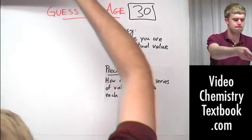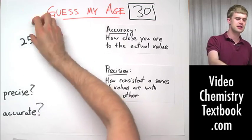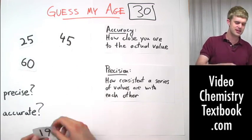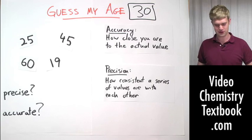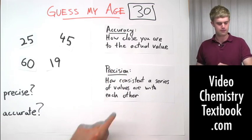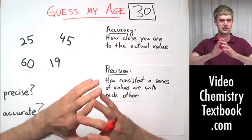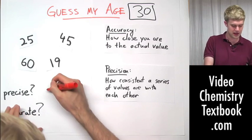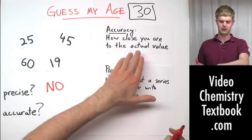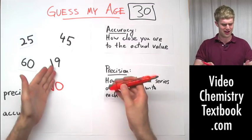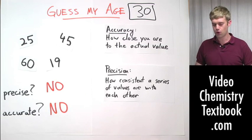Let's look at another example here. Another four people come and play Guess My Age. And here are the guesses that they make. One person says he's 25, another says he's 45, another says he's 60, and another says he's 19. Let's look at these definitions. Are these answers precise? Are they close together? Are they consistent? Not at all. We have everything from 19 all the way up to 60, scattered all over the place. So are they precise? No. Absolutely not. And additionally, let's look at accuracy. Are they accurate? Are they close to the actual value? Absolutely not. We have everything from 19 to 60. We didn't get anywhere near 30. So we'll say these are neither precise nor are they accurate.